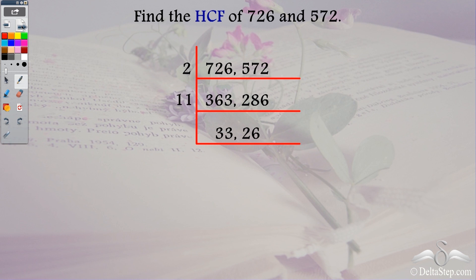Now if I check for the next prime number which is 13, 13 divides this but it does not divide 33 and we keep on checking for all the prime numbers till 26. We will see that there is no prime number which divides these two numbers. So we need to stop here and the HCF is given by 2 into 11.